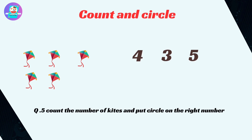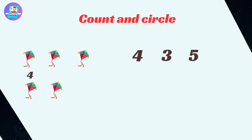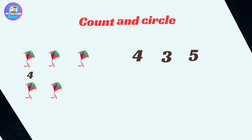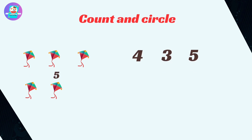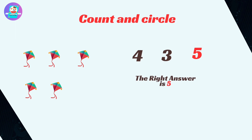Okay next. Count the number of kites and put circle on the right number. Let's count the number of kites here. 1, 2, 3, 4, 5. Okay here the number of kites is 5, then 5 will be the correct answer. So circle on 5 which is correct answer.